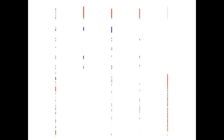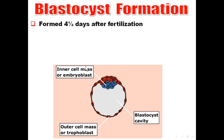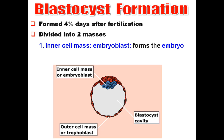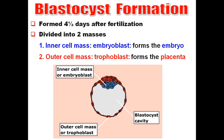The blastocyst is formed by collection of fluid inside the morula, 4 and a half days after fertilization. It is divided into two masses: the inner cell mass, called the embryoblast, which forms the embryo; and the outer cell mass, called the trophoblast, which forms the placenta.